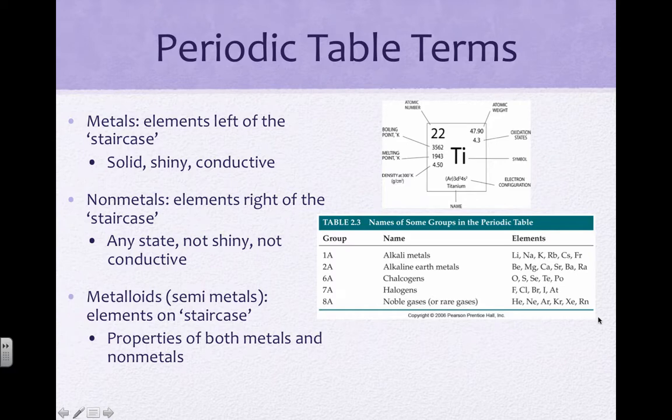The noble or rare gases, sometimes called inert gases, are gases that are stable and almost never combine to form compounds, and we'll talk more about why that is in future chapters.